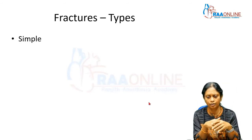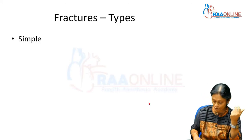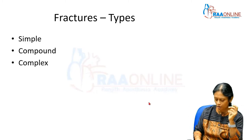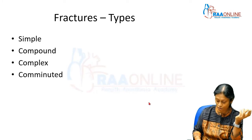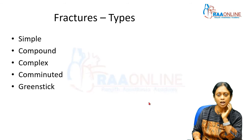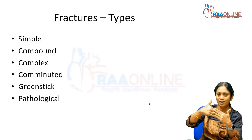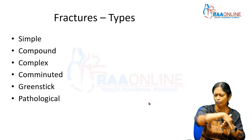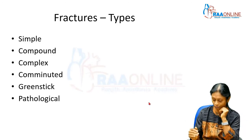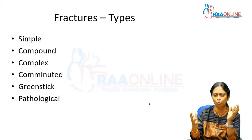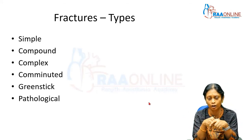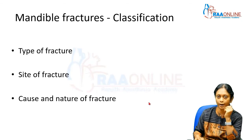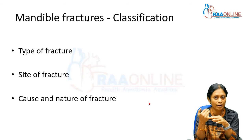The basic classification of fractures includes: simple fractures involving a single bone, compound fractures with multiple fragments, complex fractures, and comminuted fractures where bone is completely shattered. In children, a greenstick fracture occurs where one side bends but does not fracture completely. If there is a pathological condition like a large cyst in the mandibular body, a fracture of the lower border can occur — that is called a pathological fracture.